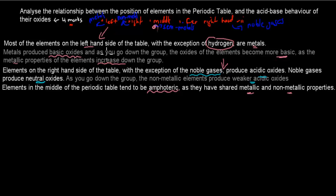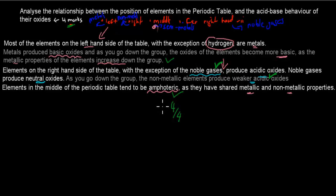To summarize the four points: the left-hand side produces basic oxides, and as you go down the group they produce even more basic oxides. Noble gases produce neutral oxides because they are non-reactive. The right-hand side — the non-metals — produce acidic oxides, and as you go down the group they become less acidic or weaker. And the middle ones produce amphoteric oxides, which are in between metallic and non-metallic. These were your four points for 4 marks. If you explained each part — left-hand side, right-hand side, middle, and noble gases — and gave a quick explanation as to why, you would get your four marks.